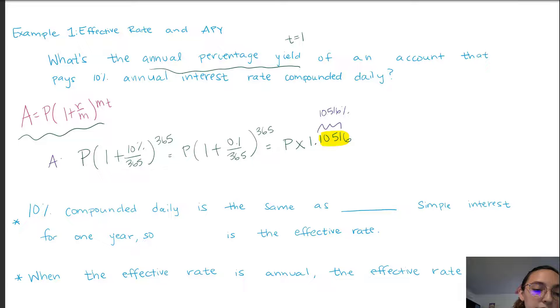This is our amount accumulated through compound interest. And this exact same amount can be achieved with simple interest if we have the rate of 10.516% for one year. So this expression is equal to this expression. And that is how effective rate works.